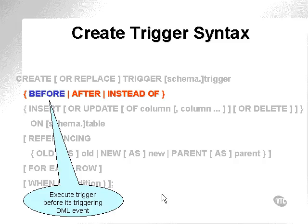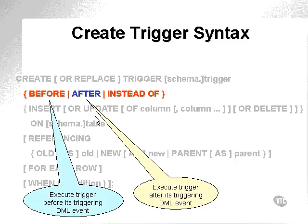A BEFORE trigger is executed before an event occurs. For instance, if we say insert a record, the insert command has begun to execute, but it won't make any changes until the trigger has been executed, because the trigger is specified to be executed before an insert event is actually performed. AFTER is the opposite — it occurs after an insert statement is performed.